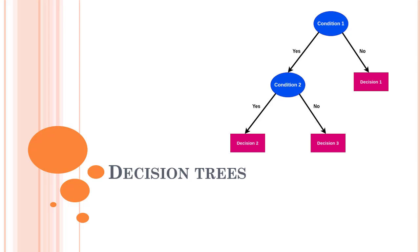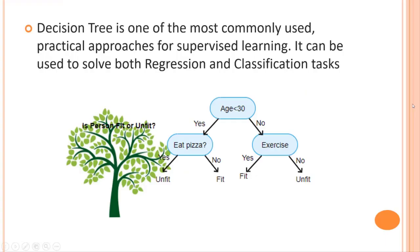Basically, how a decision tree works: we have a condition and then there are leaf nodes. If the condition is true we move to the left-hand side, or we move to the right-hand side. Decision tree is one of the most commonly used practical approaches for supervised learning — it can be used for both regression and classification tasks. It is based on a flowchart-like tree structure, a model of decisions where each node represents some logic or decision.